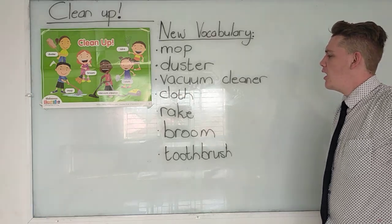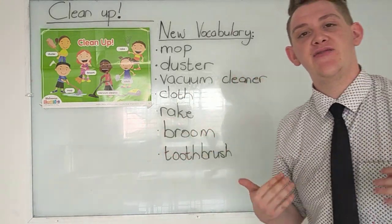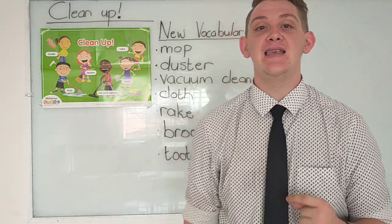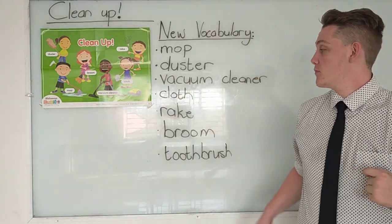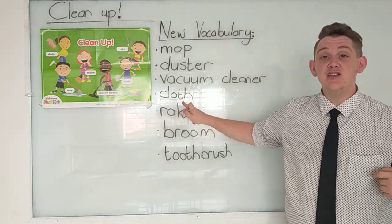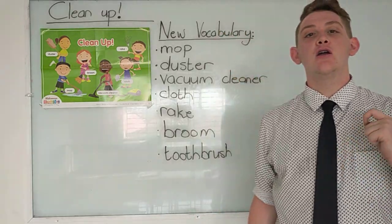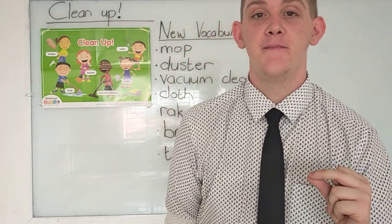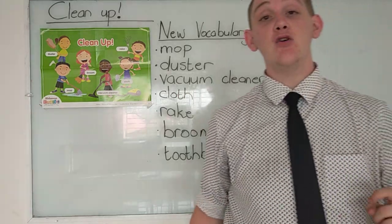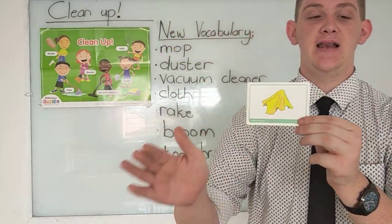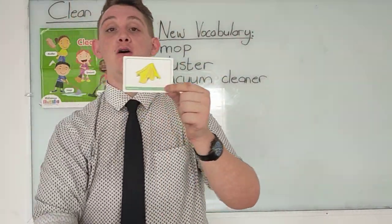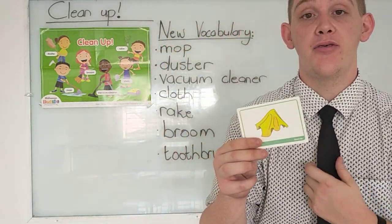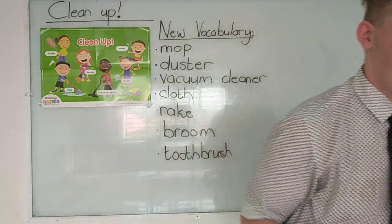Now let's see our next one. Our next few actually is very easy. We have cloth. Look at my teeth at the end — cloth. The TH makes 'th' — cloth. Can you say cloth? A cloth is almost like a rag. We use it to clean the tables, to wipe them down. Make it a little bit wet, use a little bit of soap, then we clean off the tables.